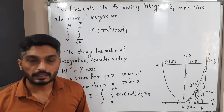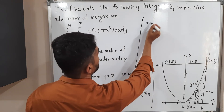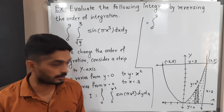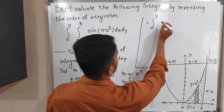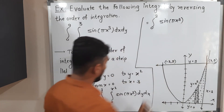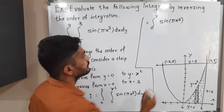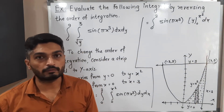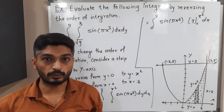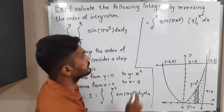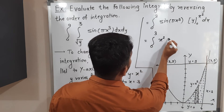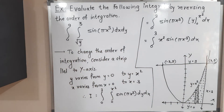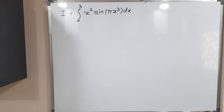Therefore, I = ∫₀³ ∫₀^(x²) sin(πx³) dy dx. In the original integral we had dx dy, but now we have dy dx — we have changed the order of integration. Integrating with respect to y first: sin(πx³) is a function of x only, so it is treated as a constant. The integral of dy is y, evaluated from 0 to x², giving simply x². So we get: I = ∫₀³ x² sin(πx³) dx.